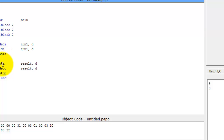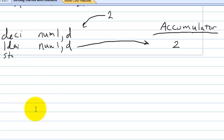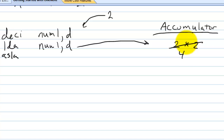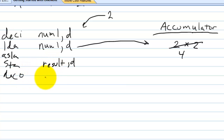So we multiplied the accumulator by two using asla, then stored it and printed it out. We loaded two into the accumulator, asla multiplied two by two and left us with four in the accumulator, then we stored it into result directly and did deco to print it out — result was four. But what we want to do is multiply by odd numbers.